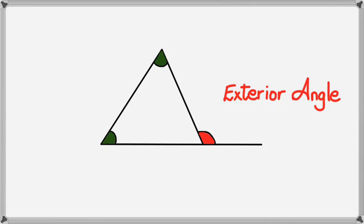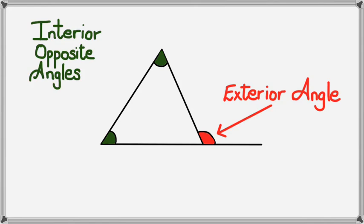The red angle just outside the triangle — the one right here — is called an exterior angle. The two green ones are called the interior opposite angles: there's one there and another one there. The idea is that the exterior angle is actually the total of the two green interior opposite angles.